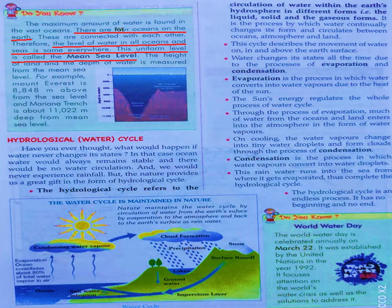We also have the Mariana Trench in the Pacific Ocean, which has the greatest depth. Its depth is also measured from the mean sea level — the Mariana Trench has a depth of 11,022 meters from the mean sea level. So any measurement of height or depth is taken from mean sea level.